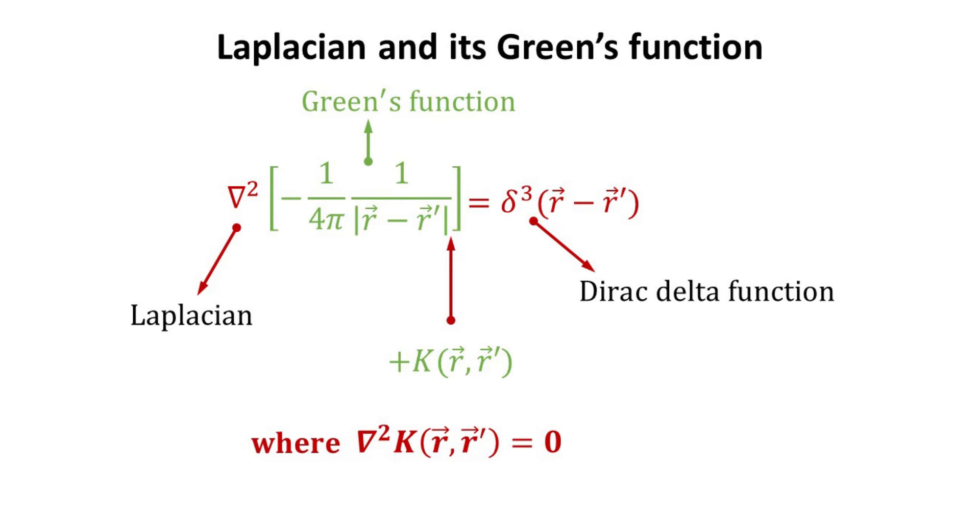Clearly, the Green's Function as defined is not unique, as one can add to it a function K, as long as K satisfy the Laplace equation as shown. The Laplace equation is basically the Poisson equation, but without the source term.